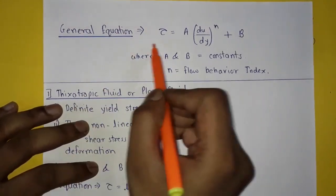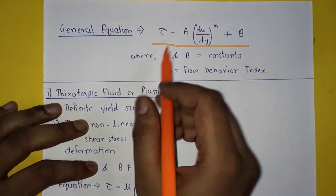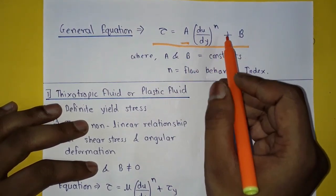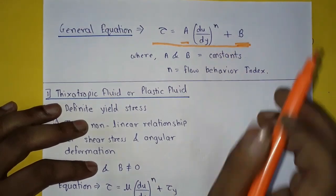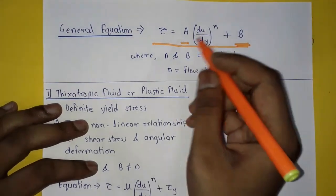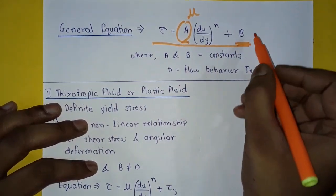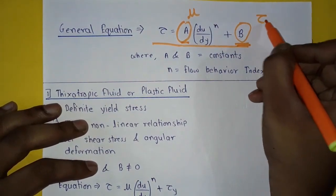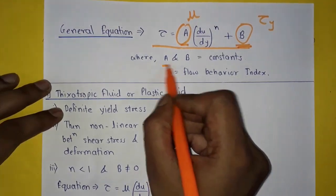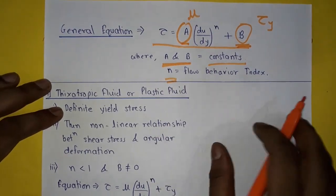Now friends, this is the general equation of shear stress for various fluids: tau is equal to a times (du upon dy) raised to n, plus b. For various fluids, we will assume a is equal to mu and b is equal to tau_y, that is yield stress. Here, a and b are constants and n is the flow behavior index.